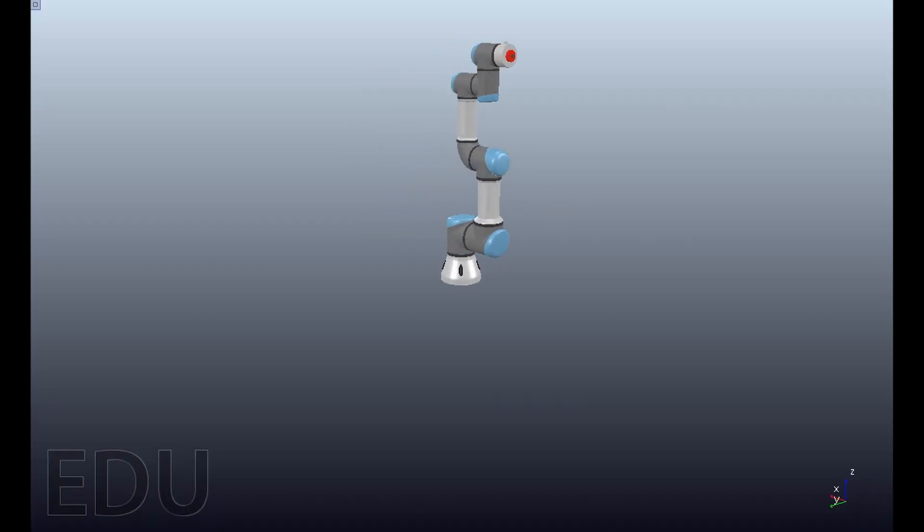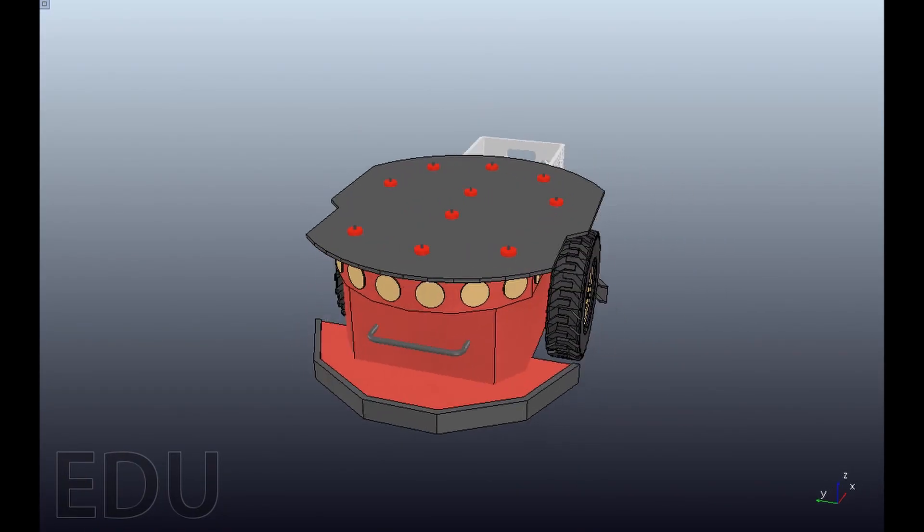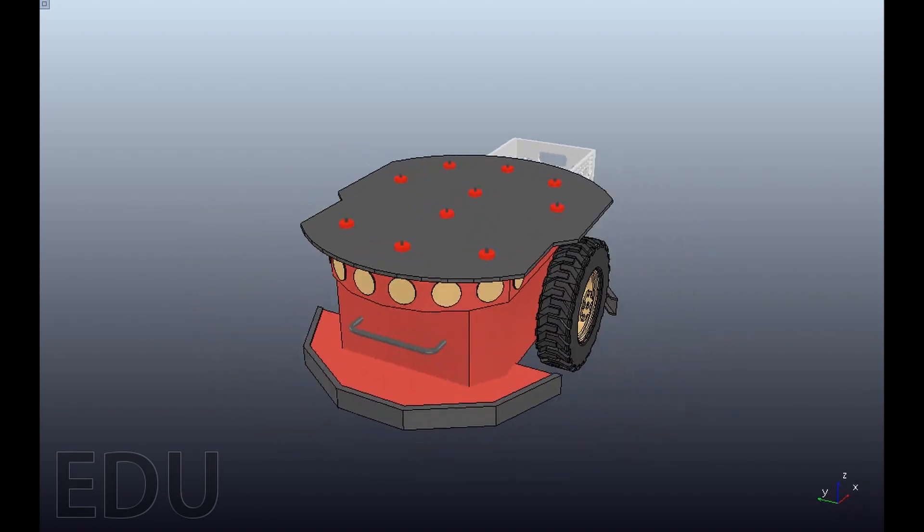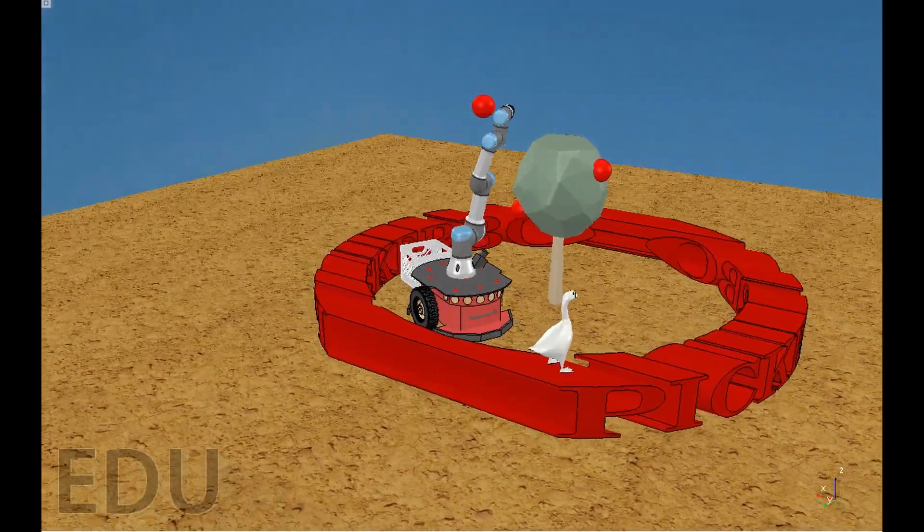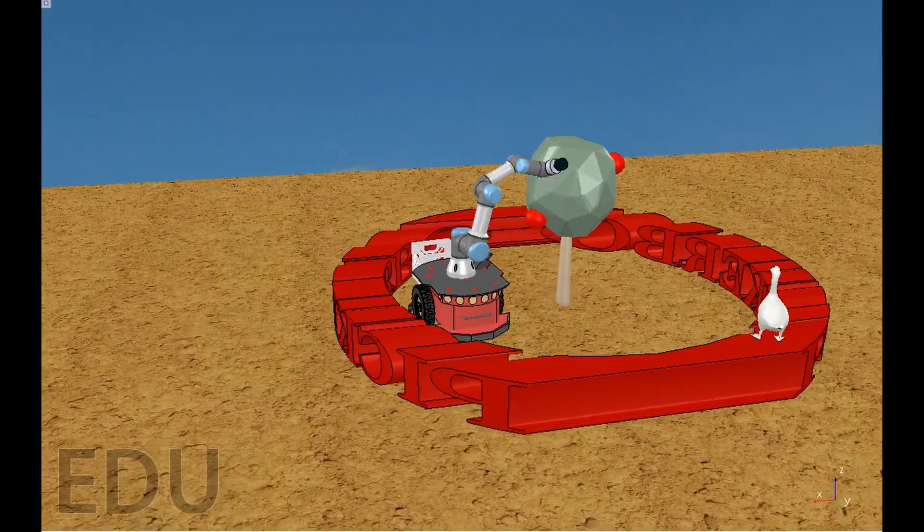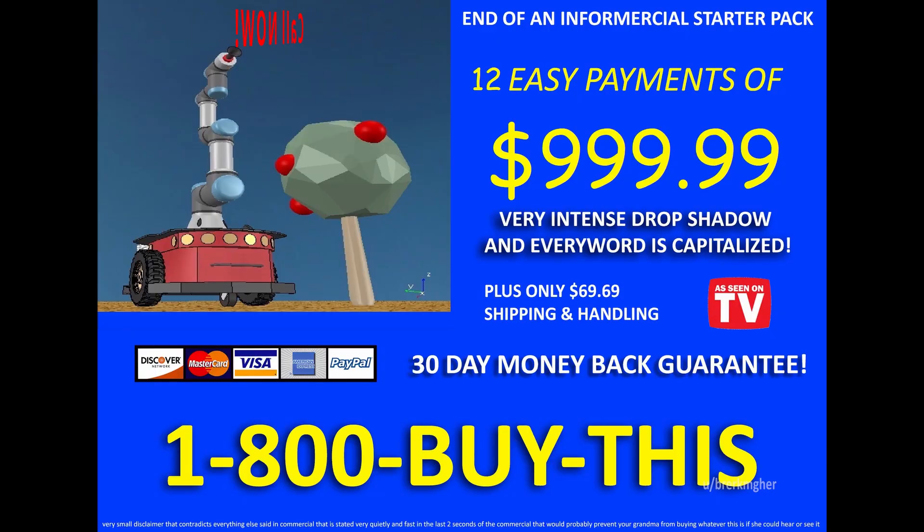Pickerbot uses a combination of a UR3 robot arm and a Pioneer mobile chassis that work together in conjunction to provide you with the best fruit picking experience. Order yours now with just 12 easy payments of $999.99. That's 12 easy payments of $999.99 and you could have your very own Pickerbot. Call 1-800-BUY-THIS before we run out.